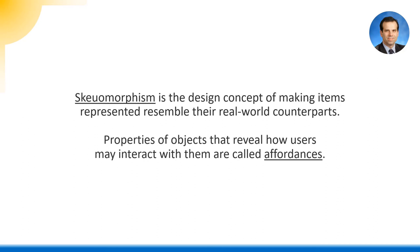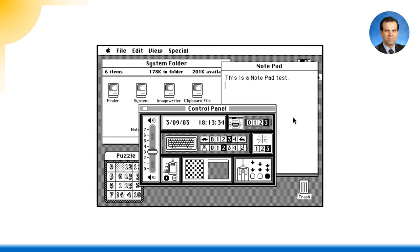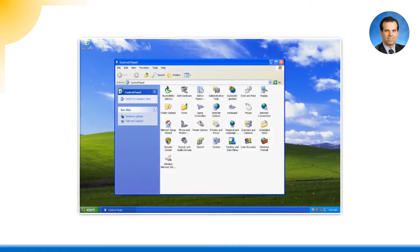Properties of objects that reveal how users may interact with them are called affordances, which are important to understand when designing easy-to-use, intuitive interfaces. Examples are images of folders to denote file directories and buttons with bevels to let users know they can click on them. But the overall aesthetic at the time was quite restrained due to the low resolution of the black and white displays, so designers couldn't deliver richer experiences. This changed in time.